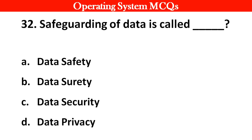Next question: Safeguarding of data is called: Options: A. Data Safety. B. Data Surety. C. Data Security. D. Data Privacy. Right answer is option C: Data Security.